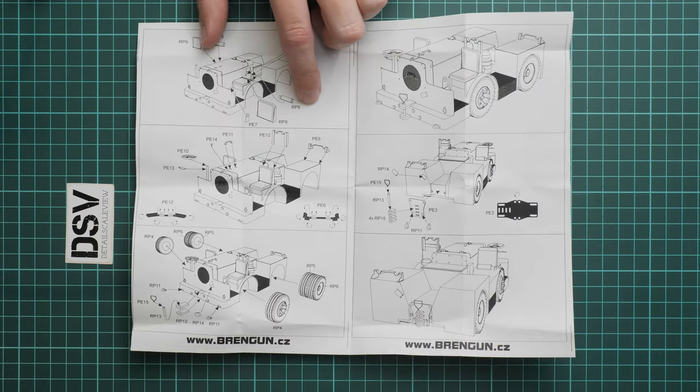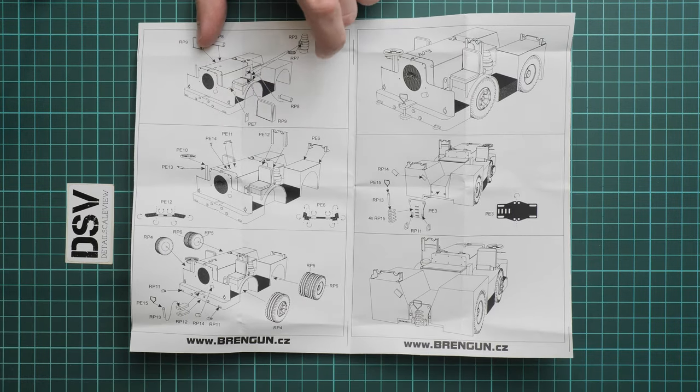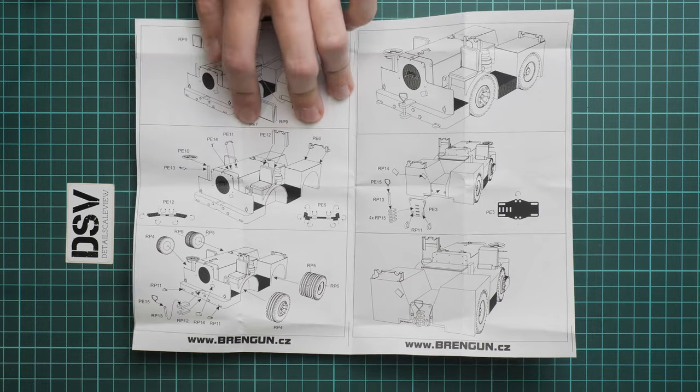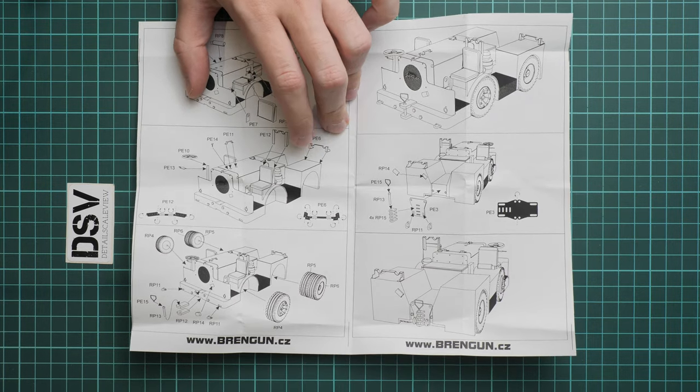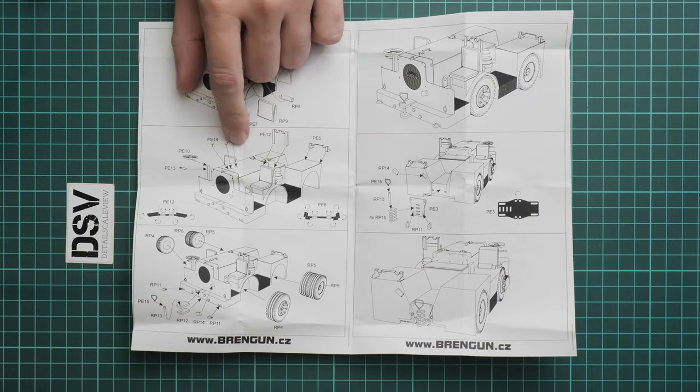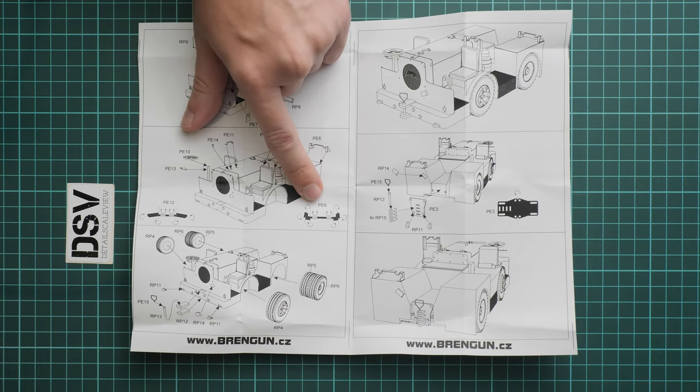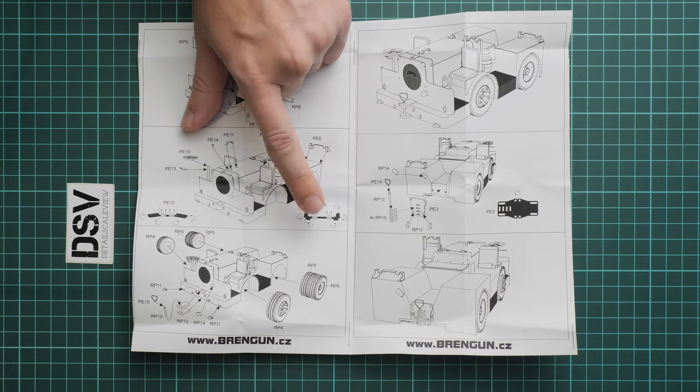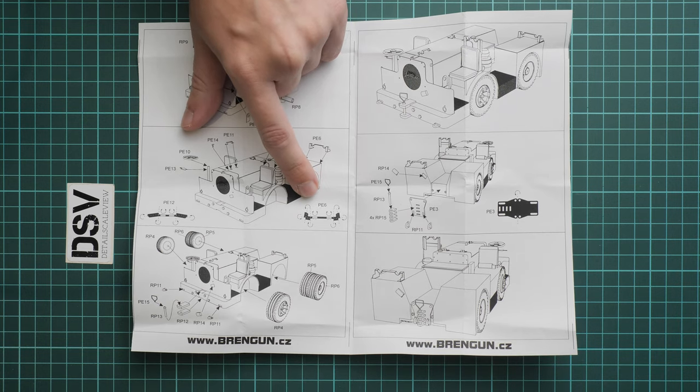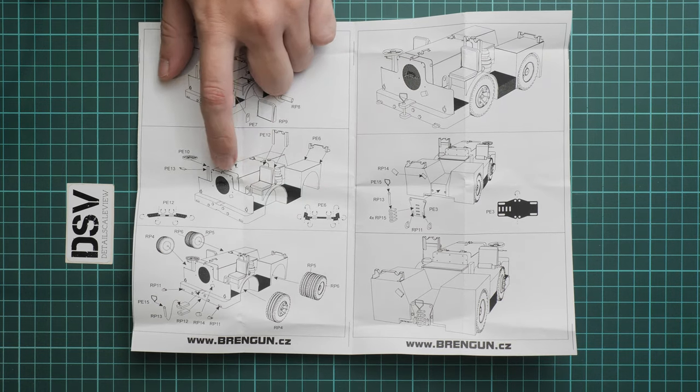Here we continue with some resin parts and PE parts applied on the sides. And next we continue with more PE parts which will be bent here and there, as you can see there are special schemes how you should bend these parts, so keep track of this stuff, because you might end up with the wrong position.